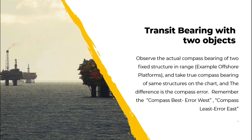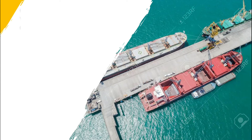What is transit bearing with two objects? We can get the compass error by observing the actual compass bearing of two fixed structures in range — for example, offshore platforms — and take the true bearing of the same structures on the chart. The difference is the compass error. Remember the rule: compass best, error west.